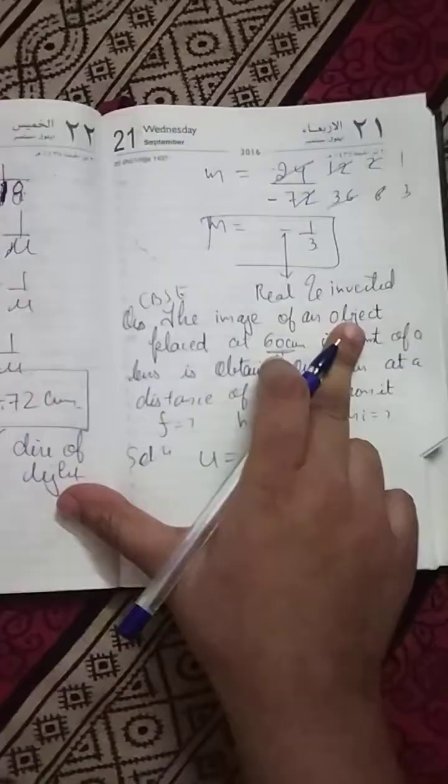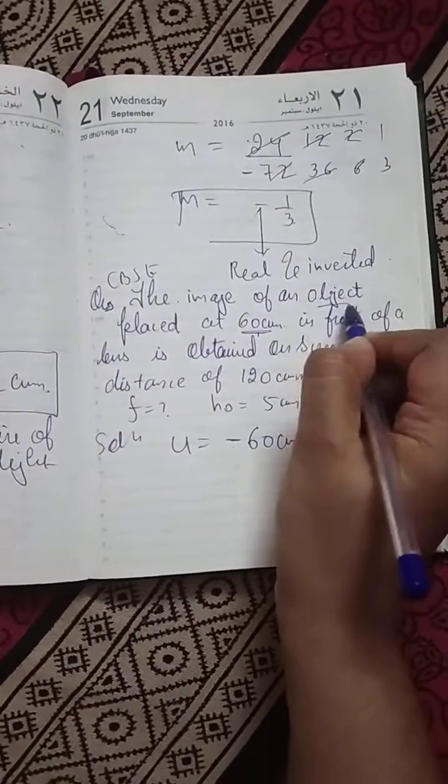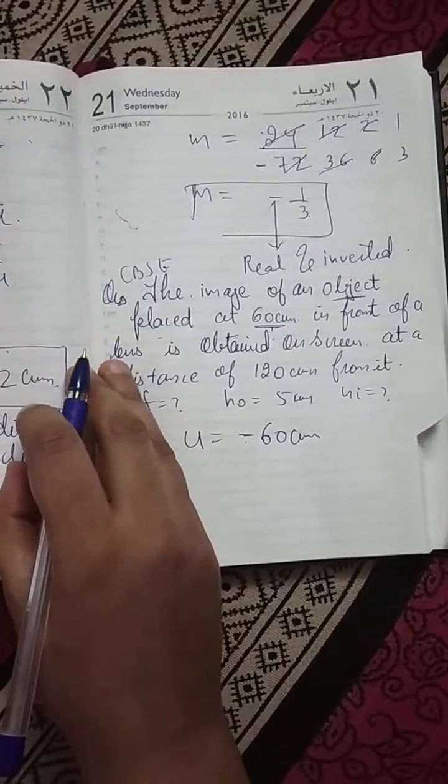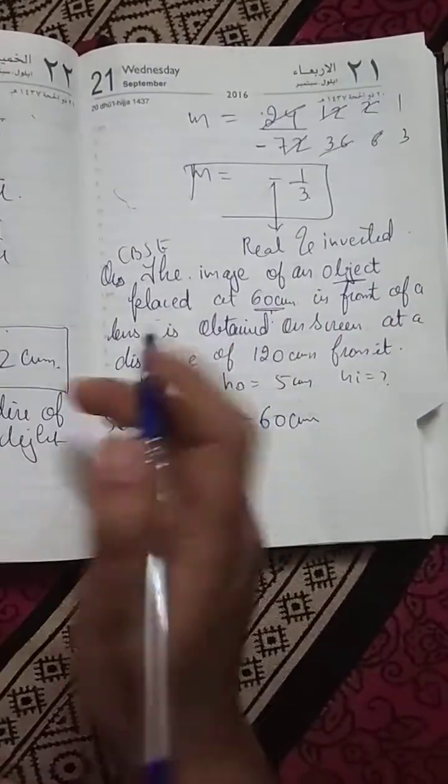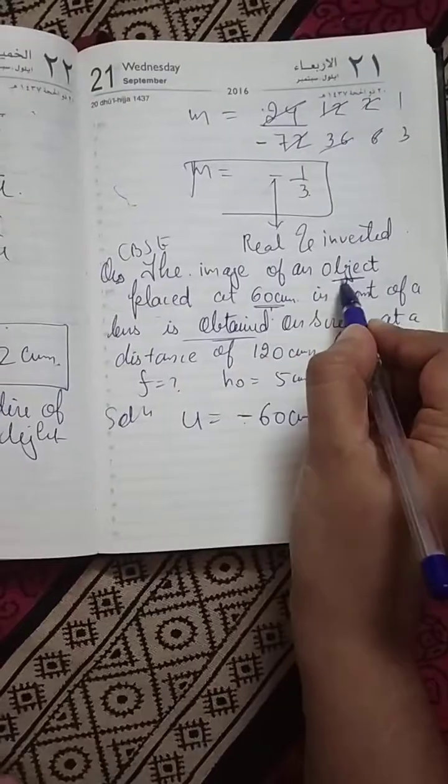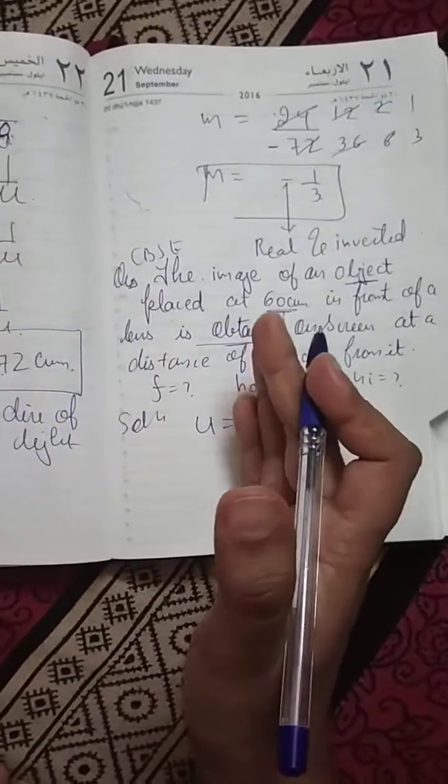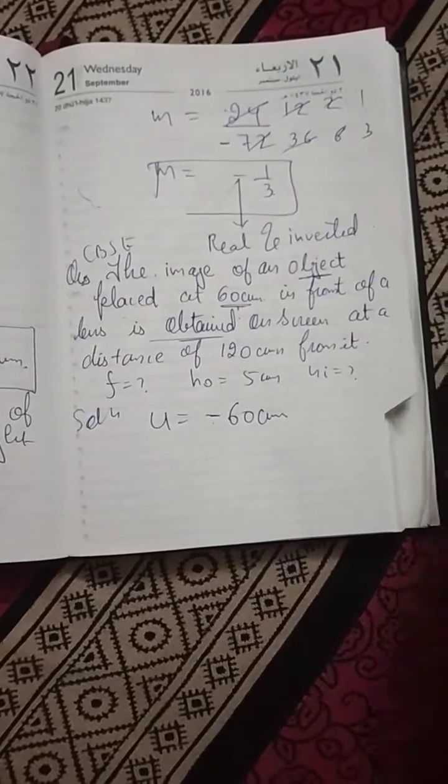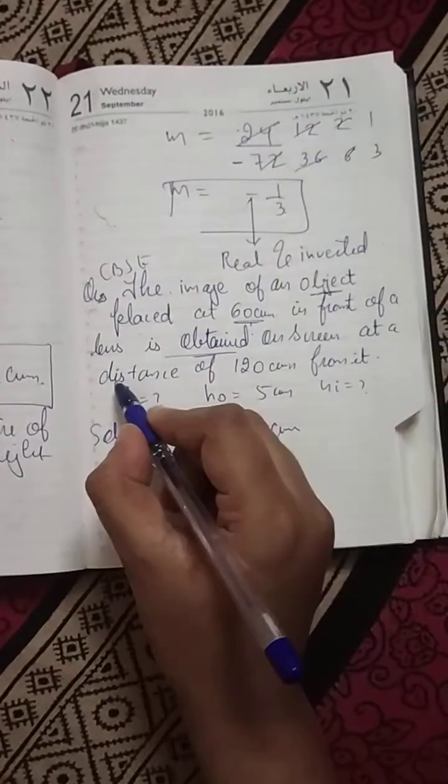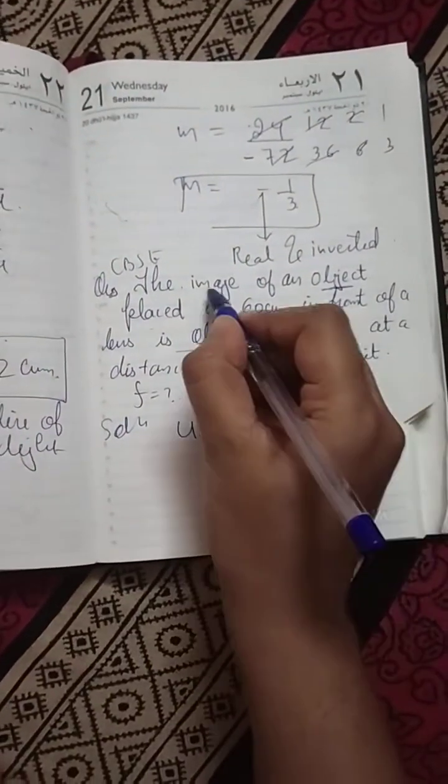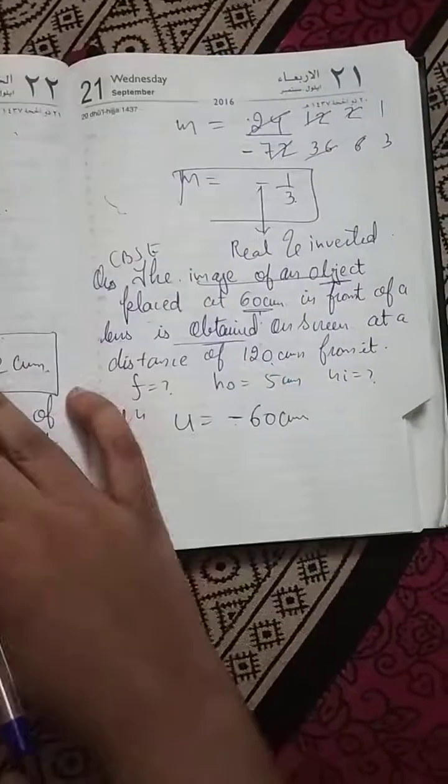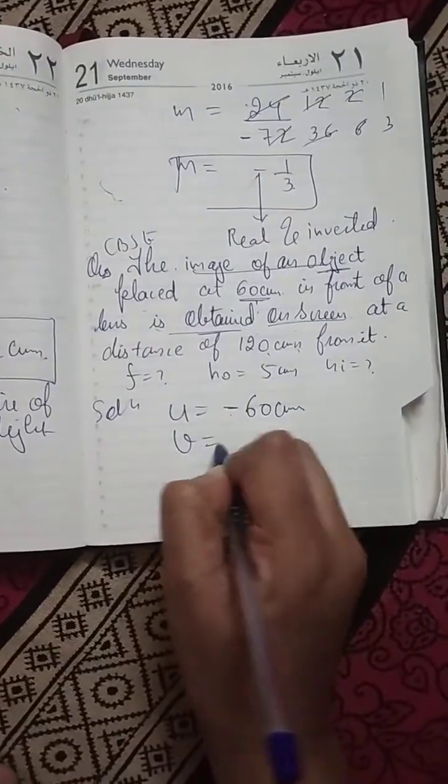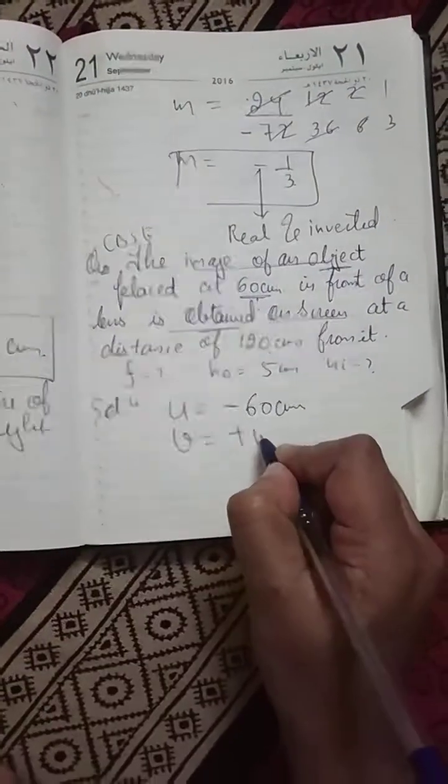The image of an object on a screen is obtained at a distance of 120 cm in front of a lens. Why is it obtained on a screen? Because it is real and inverted. Real and inverted images are always obtained on a screen. At a distance of 120 cm, it means it could be plus.